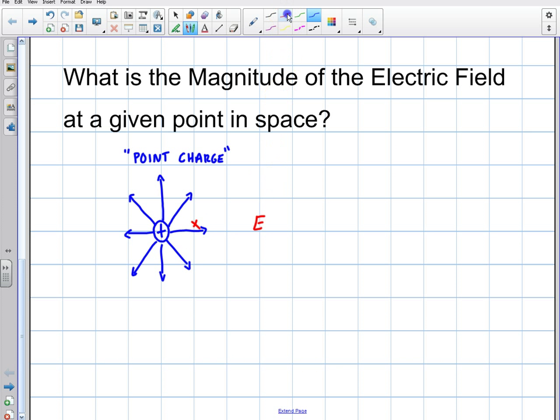So basically the field of a point charge is going to be K, which is Coulomb's constant, Q, which is the magnitude of the charge, over R squared. This is a constant, Coulomb's constant, and this is just going to be 9 times 10 to the 9. This is the charge. And this is the radius.